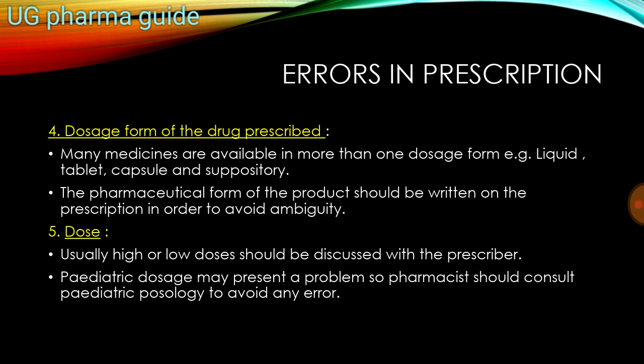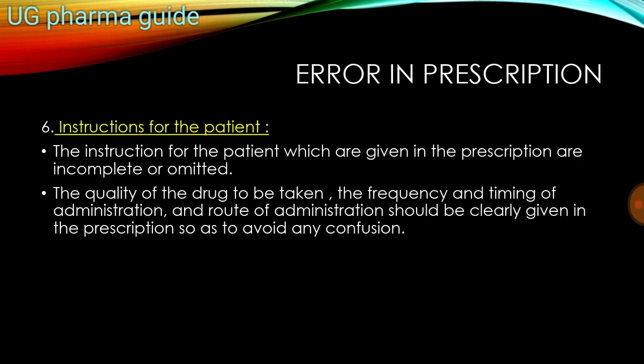Fifth is instructions for the patient. The instructions for the patient given in the prescription are often incomplete or omitted. The quantity of the drug to be taken, the frequency and timing of administration, and the route of administration should be clearly given in the prescription so as to avoid any confusion.